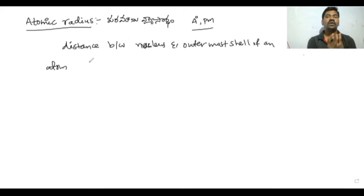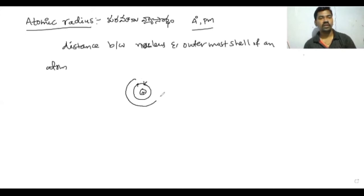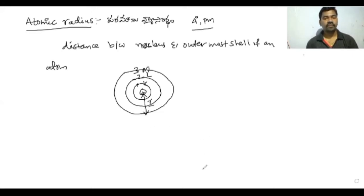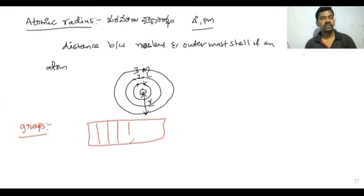So, atomic radius is the distance from the nucleus to the last shell — the outermost shell of an atom. Now, in the periodic table, vertical columns are called groups. There are a total of 18 vertical columns, so 18 groups.